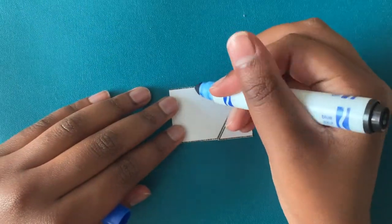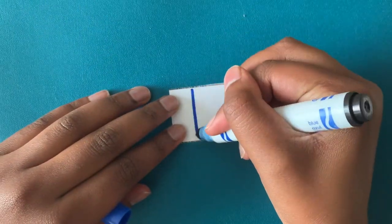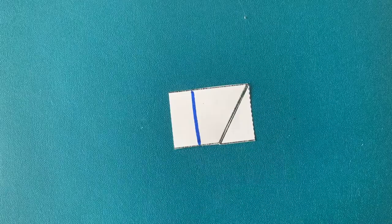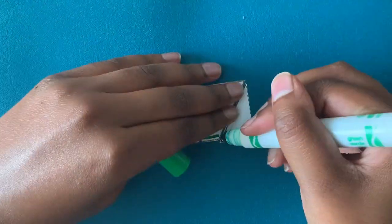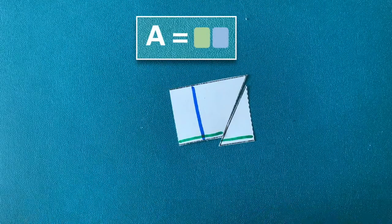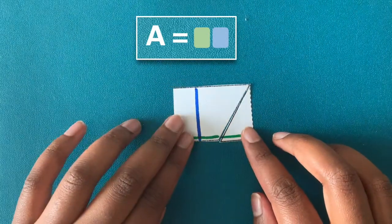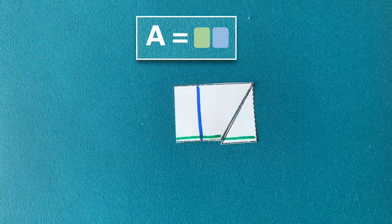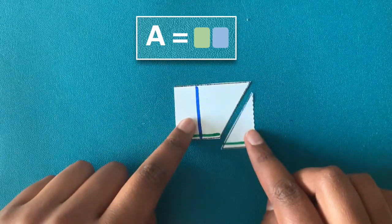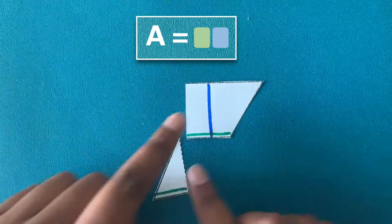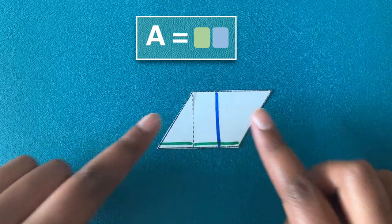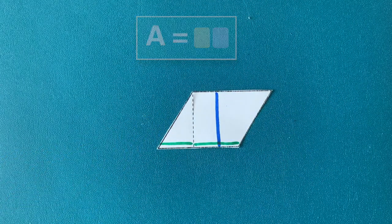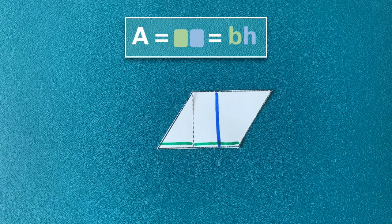Then use colored markers to mark the length and the width of the rectangle. I'm using blue for the width and green for the length. Now we know that the area of the parallelogram is simply the green multiplied by the blue. When we reassemble the parallelogram, we can see that the green is the base and blue is the height, so the area of a parallelogram is base times height.